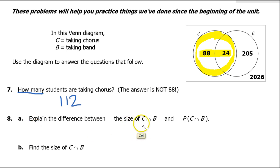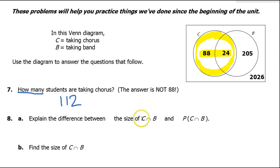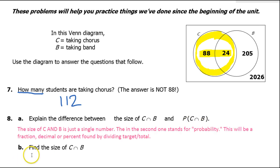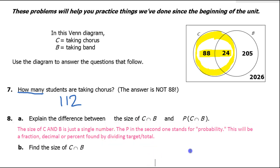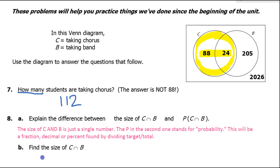What's the difference between the size of C and B and the probability of C and B? The size of C and B is just a single whole number. The P in the second one stands for probability — this will be a fraction, decimal, or percent found by dividing target over total.